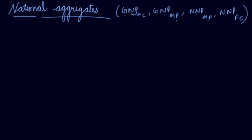In the previous video, we discussed only the domestic products — DP everywhere. In this video, we will be discussing about NP. Now, how do you convert DP into NP? That is, GDP at MP is given.